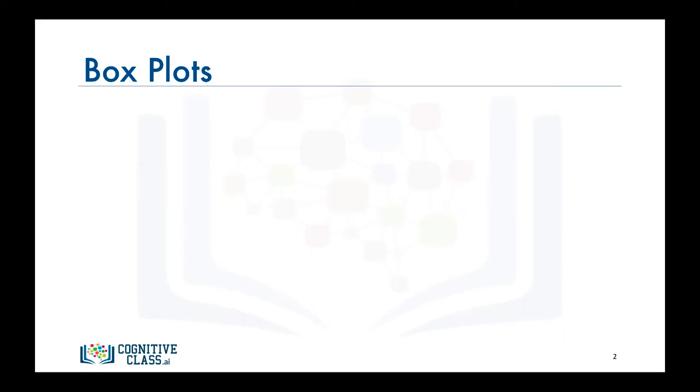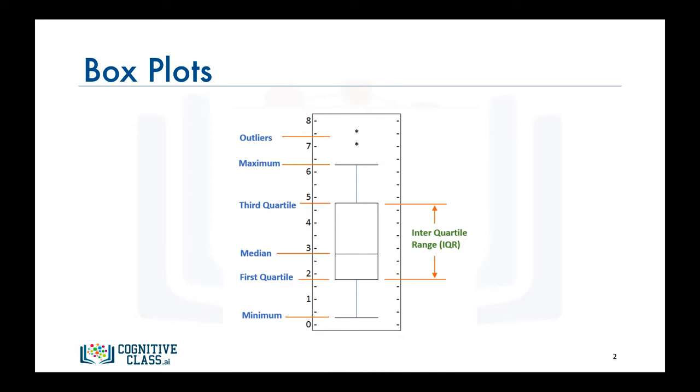So what is a box plot? A box plot is a way of statistically representing the distribution of given data through five main dimensions.